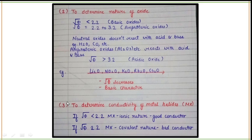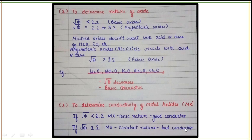Point three is to determine the conductivity of metal halides. If the value of √φ is less than 2.2, the MX-type compound — where M represents the metal and X represents the halide (fluorine, chlorine, bromine, or iodine) — will have ionic nature and will be a good conductor of electricity. If the value of φ is greater than 2.2, then the MX-type compound has covalent nature and is a bad conductor of electricity.